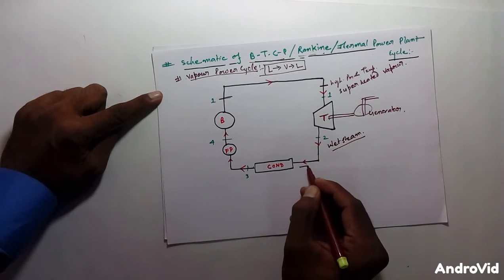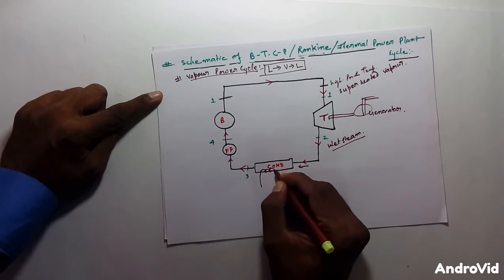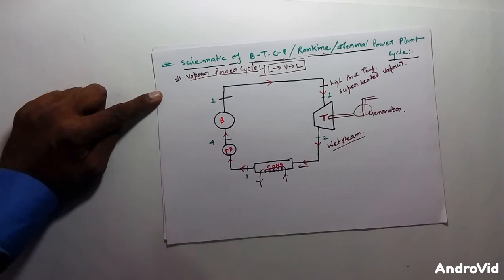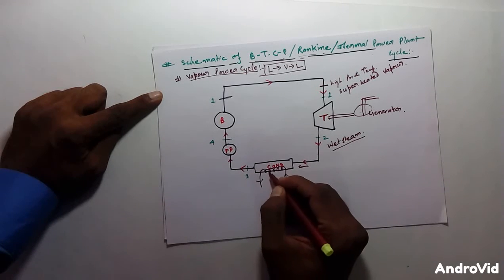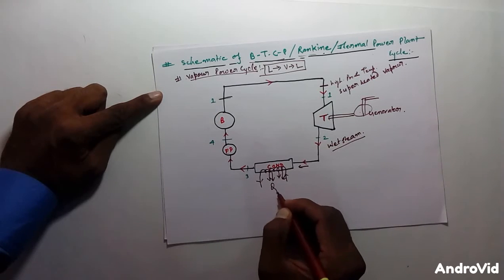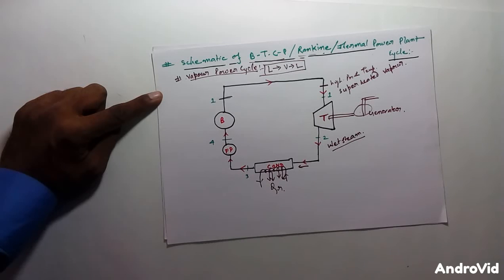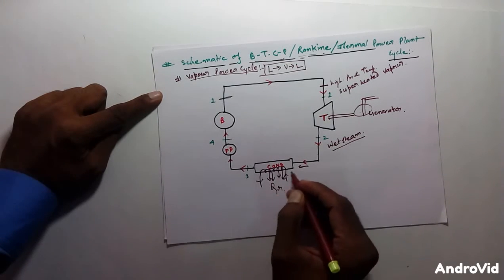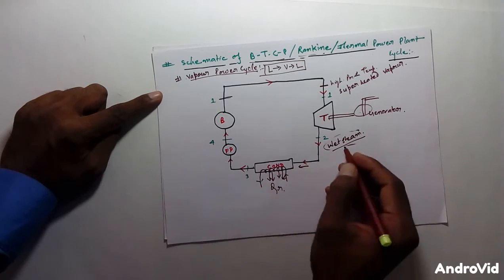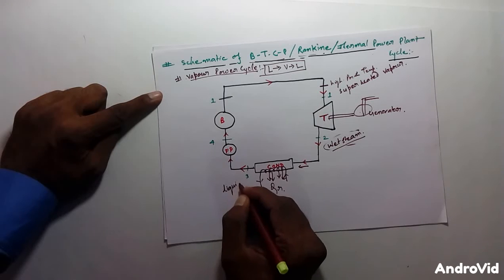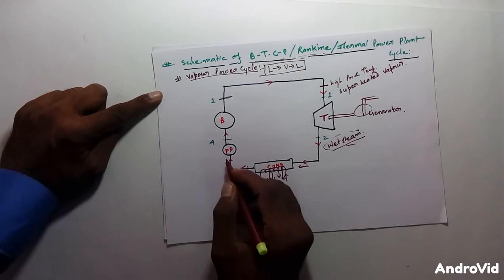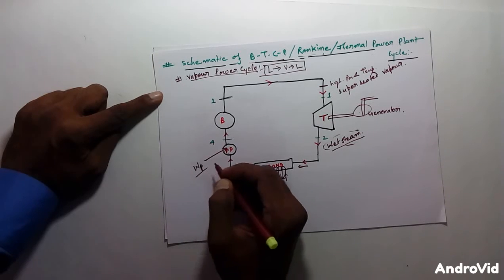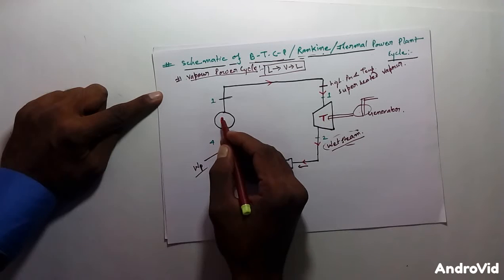When this wet steam goes to the condenser, the condenser is used to condense the wet steam into liquid. This is a heat rejection process — heat rejected QR takes place. After passing through the condenser, the wet steam transforms into sub-cooled liquid. This liquid is then sent to the feed pump, where we provide pump work WP to pump the liquid up to boiler pressure.